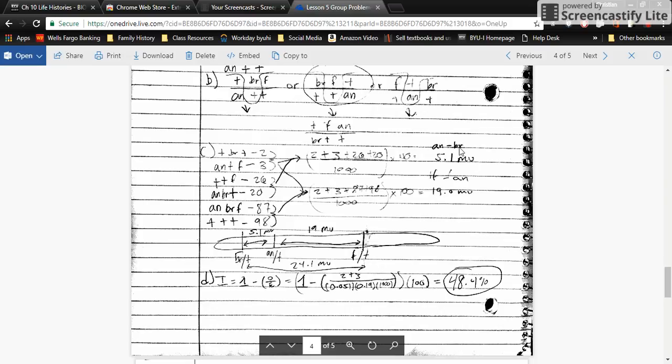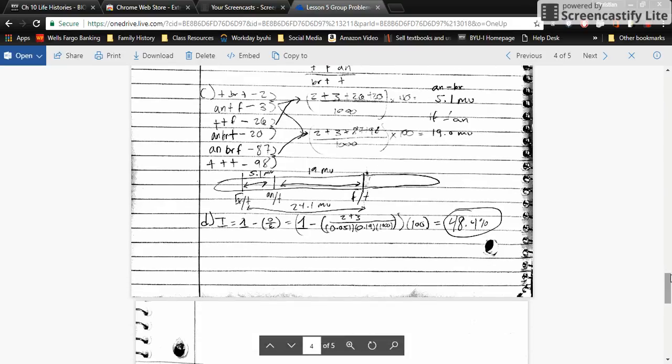I'm figuring out that distance from this calculation between AN and BR—it's 5.1 map units. Then AN to F, calculated that to be 19 map units. Overall, you don't have to do this part, but it's 24.1 map units from BR to F.